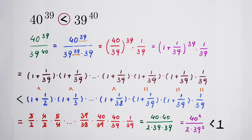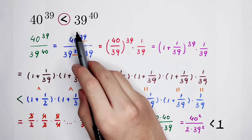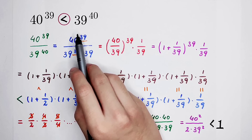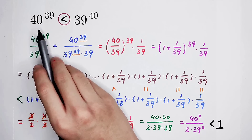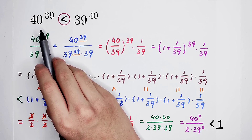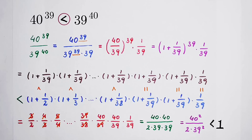The answer is: certainly, 39 to the power of 40 is much bigger than 40 to the power of 39. Do you get it? Don't forget to give me a thumbs up, subscribe to my channel for more videos, and we'll see you next time. Bye-bye!